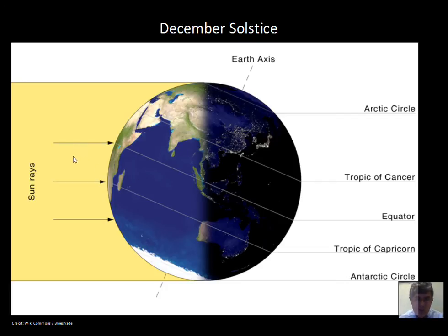That's the reason for the seasons. The seasons are dominated by the effect of the tilt of the Earth — whether the Sun's rays are coming in directly or indirectly. Directly during summertime, indirectly in the wintertime. And how long the Sun is above the horizon: more than 12 hours in the summer, and less than 12 hours in the winter.